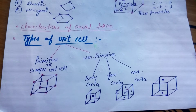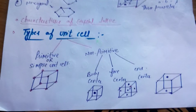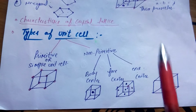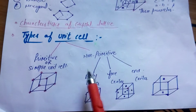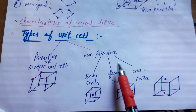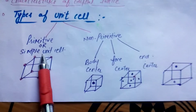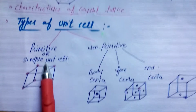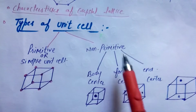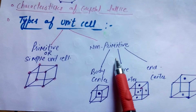In this video, we will discuss the types of unit cells. How many types are there? There are two types of unit cells. The first one is the primitive unit cell, and the second one is the non-primitive unit cell.